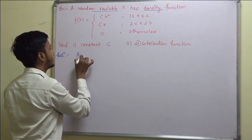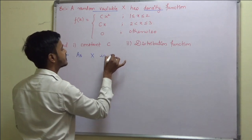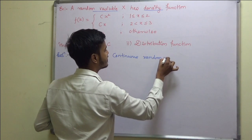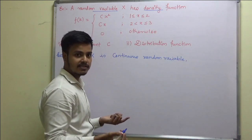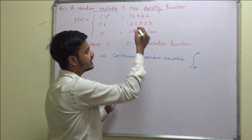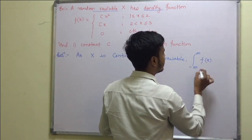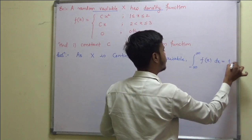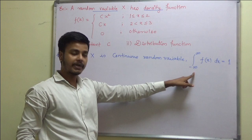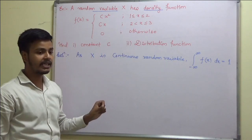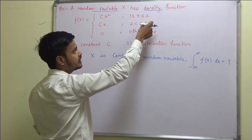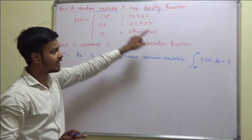Because x is a continuous random variable, we must apply the definition: for the continuous random variable x, the density function integration from minus infinity to infinity f(x) dx is equal to 1. Now, what we are going to do is break this interval according to the problem. So we have the functional value of f(x) from 1 to 2, then 2 to 3, and otherwise.